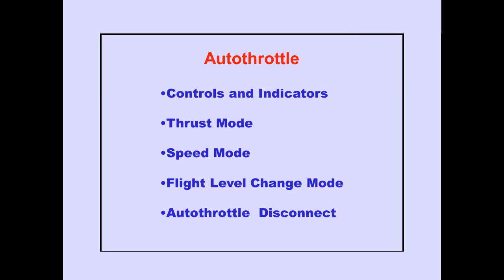In this part, we discuss the autothrottle controls and indicators, the thrust, speed and flight level change modes, and autothrottle disconnect.